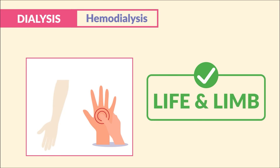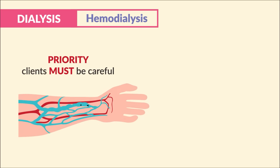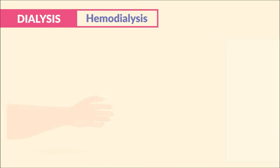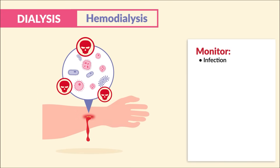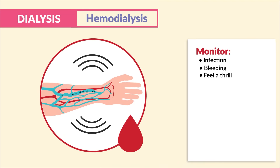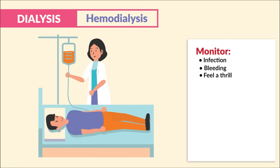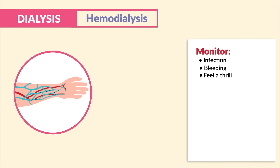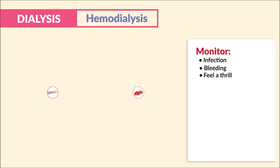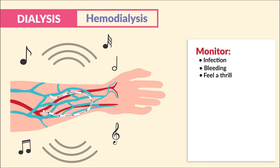Clients must be careful with new shunts as they heal. We have to avoid all pressure and monitor for key terms: infection — that warm, red, or drainage at the shunt site — and bleeding. Big one: feel a thrill, that vibration. This means blood flow is adequate. Teach clients to check this every single day, a few times a day. We're monitoring for stenosis — basically that stiffening — or even thrombosis — that blood clotting at the site. Check for those good vibrations.